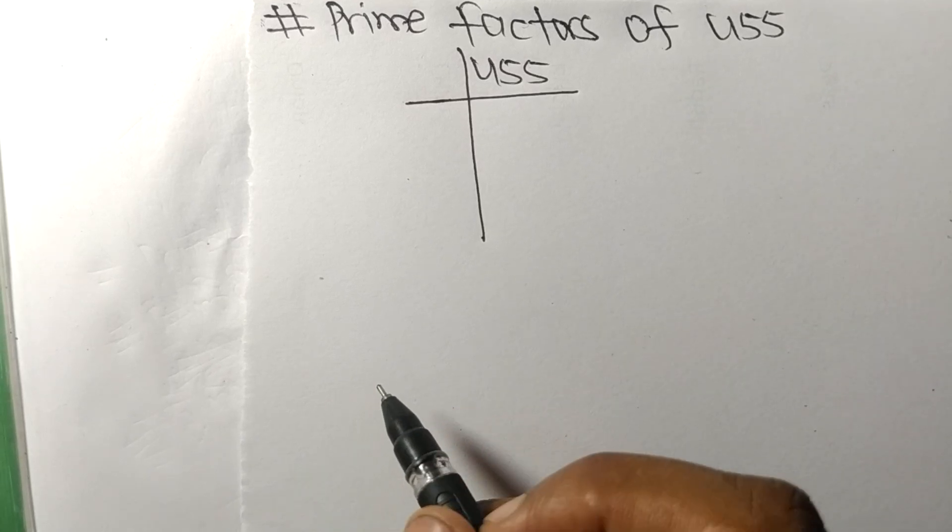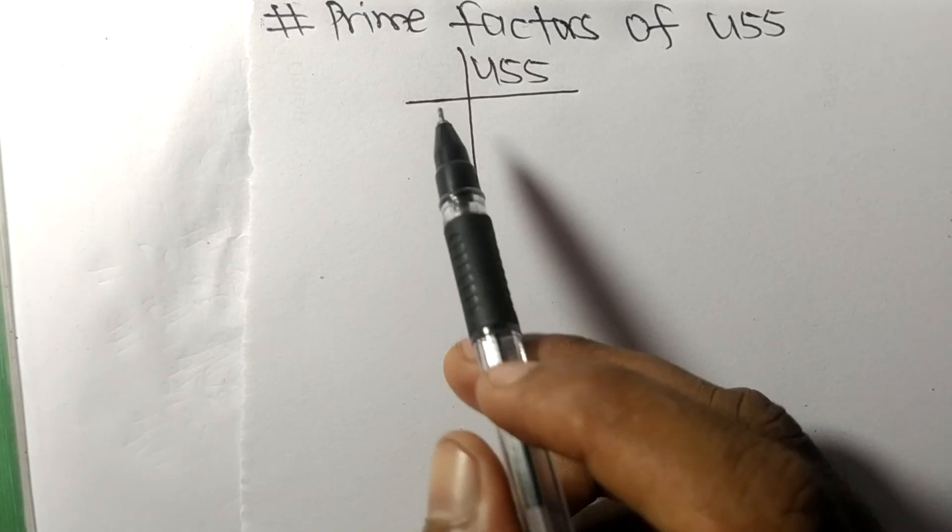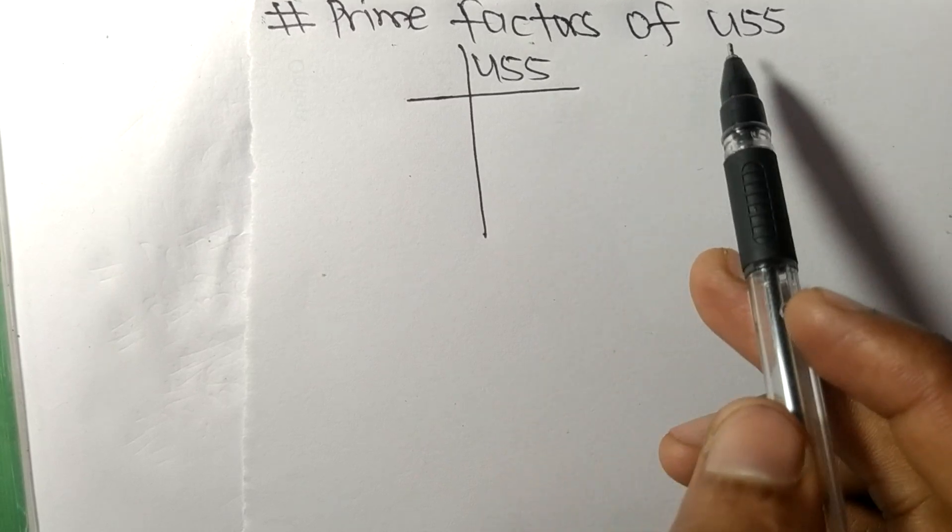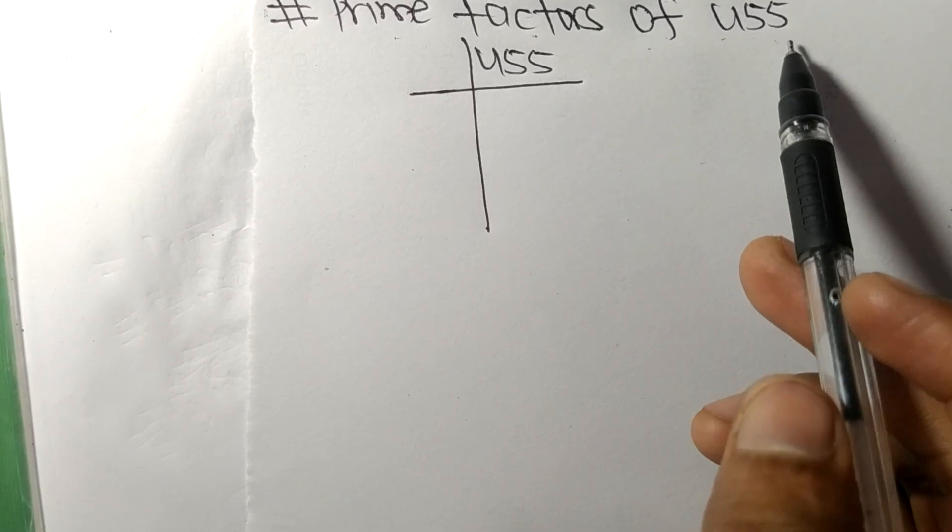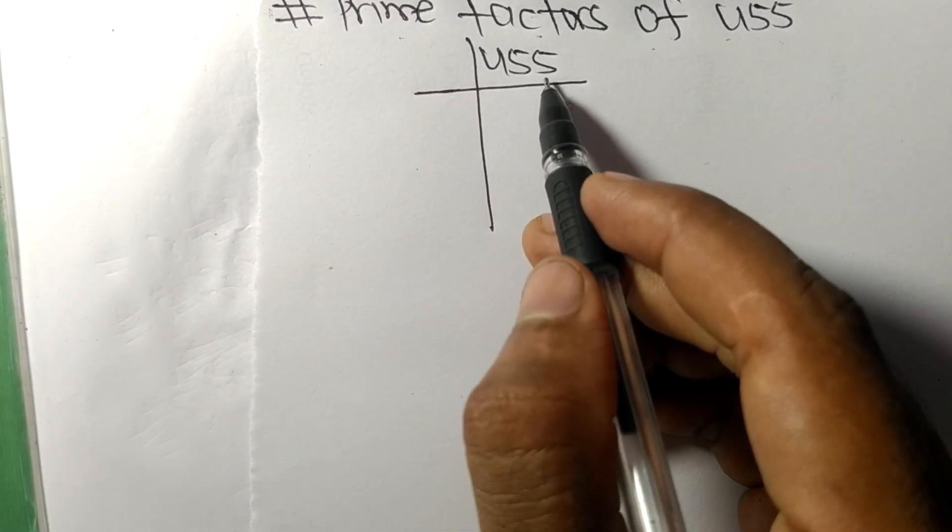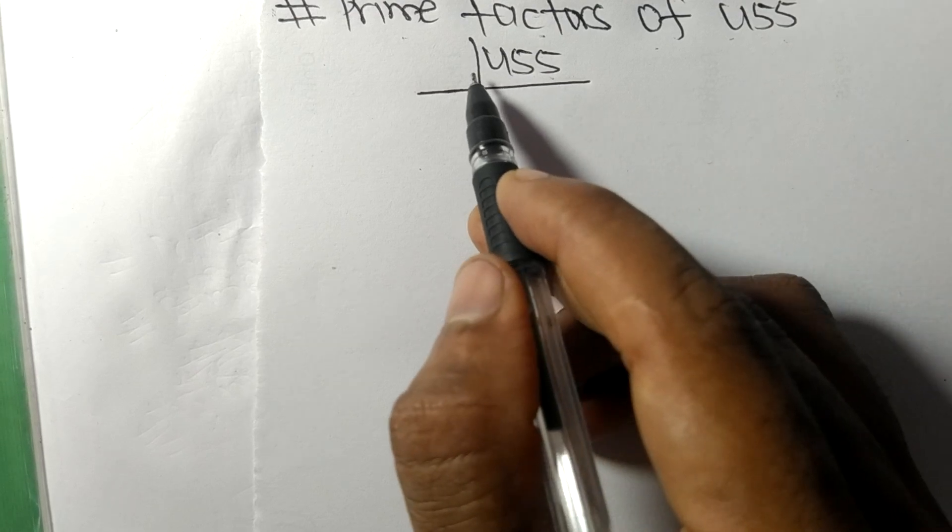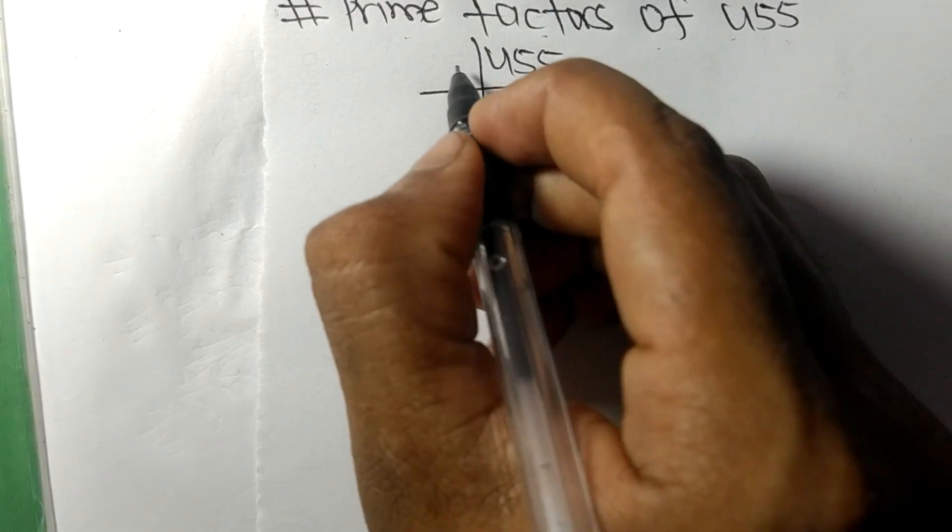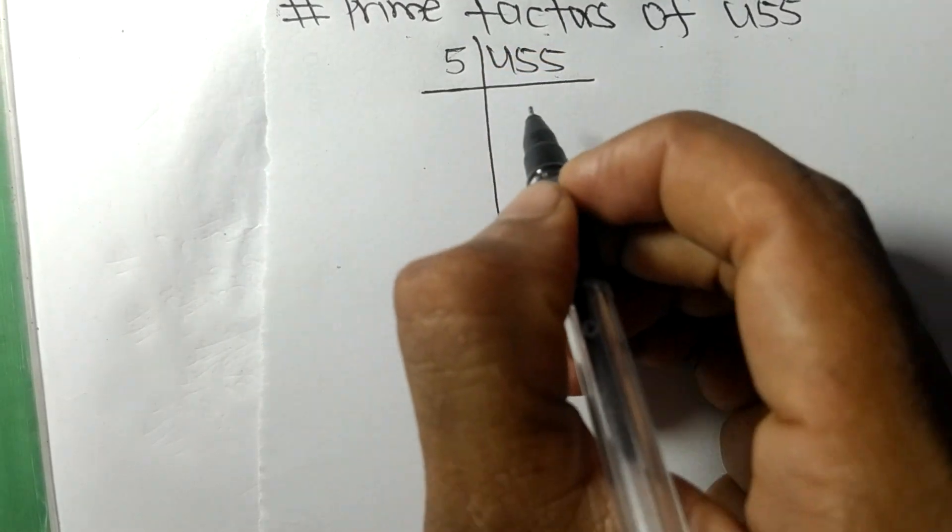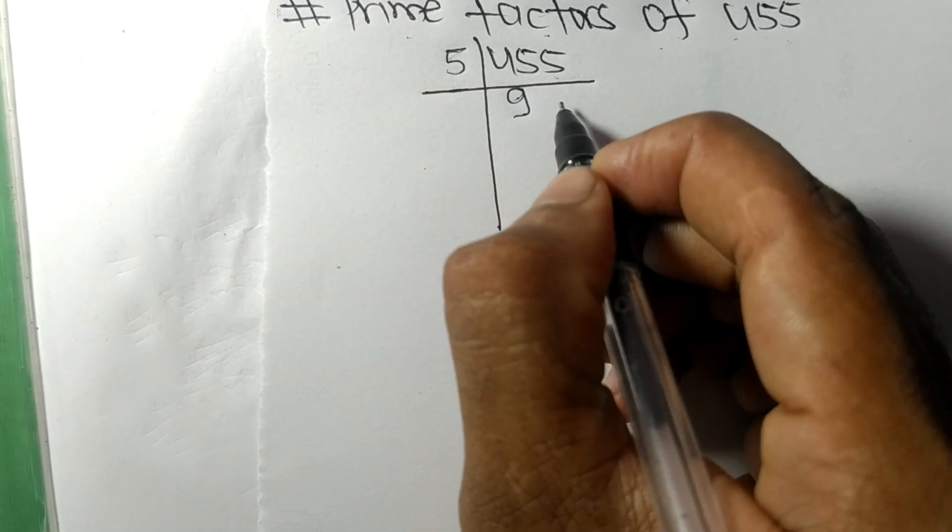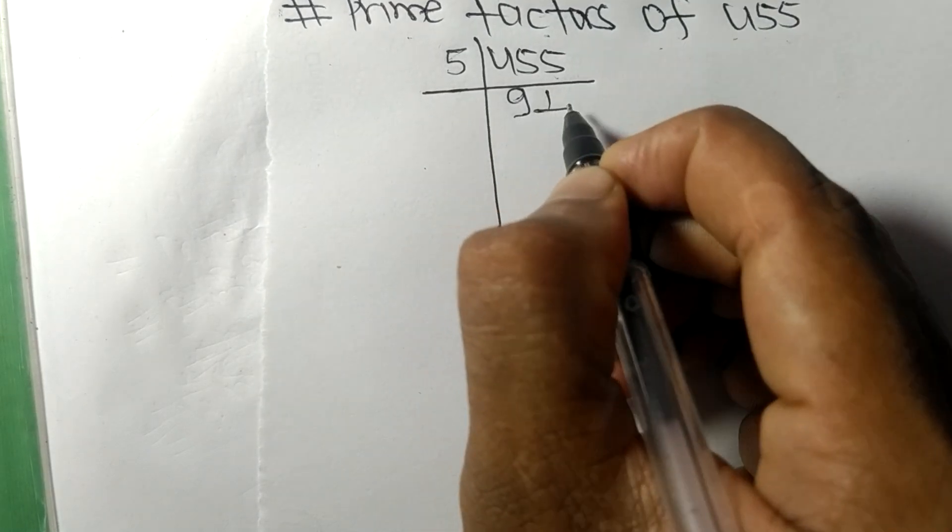Today in this video we shall learn to find the prime factors of 455. It contains 5 at the last, so this number is divisible by 5. 5 times 9 means 45, 5 times 1 means 5.